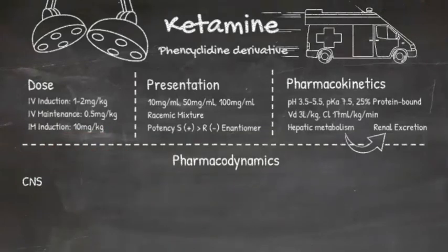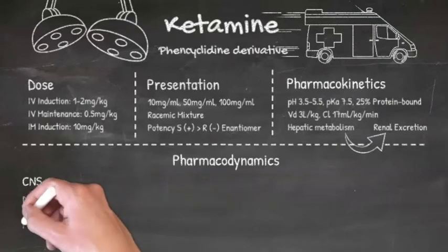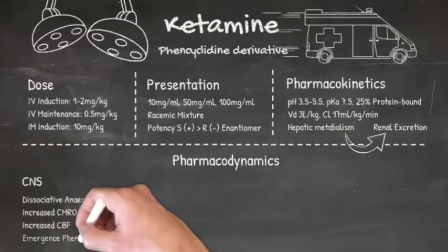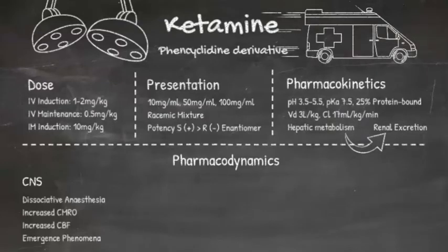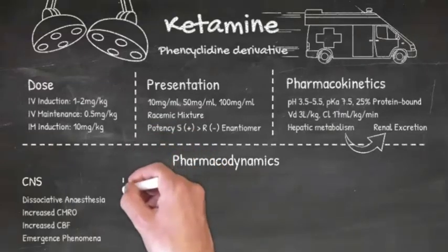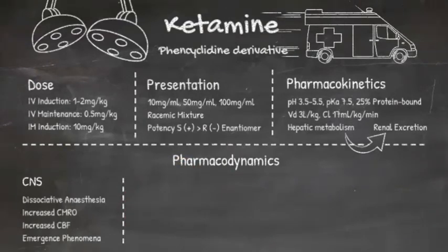Let's start with the central nervous system. Ketamine induces a state of profound analgesia and dissociative anaesthesia, and it does that by reversibly inhibiting NMDA receptors. Ketamine also increases the cerebral metabolic rate for oxygen, which is met by an increase in cerebral blood flow, and therefore raised intracranial pressure and intraocular pressures.